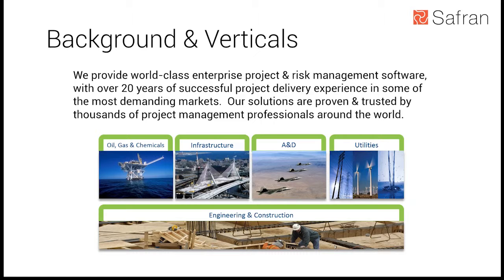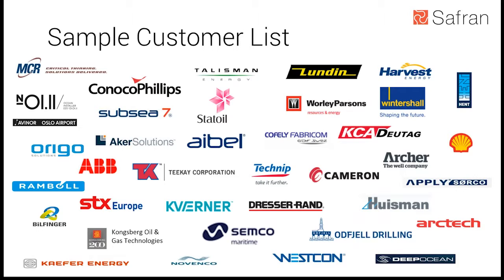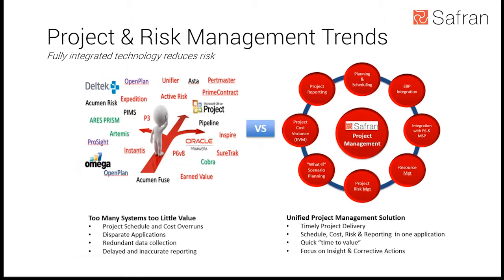Sample customers include ConocoPhillips, which recently completed one of the largest turnarounds in the history of the North Sea using Safran Project. Safran isn't exclusively used for the largest projects — companies like Statoil use it as a standard across their organization for all small, medium, and complex projects. Safran's exclusive focus on this space is a real differentiator, and the goal is delivering fully integrated solutions for the task at hand.